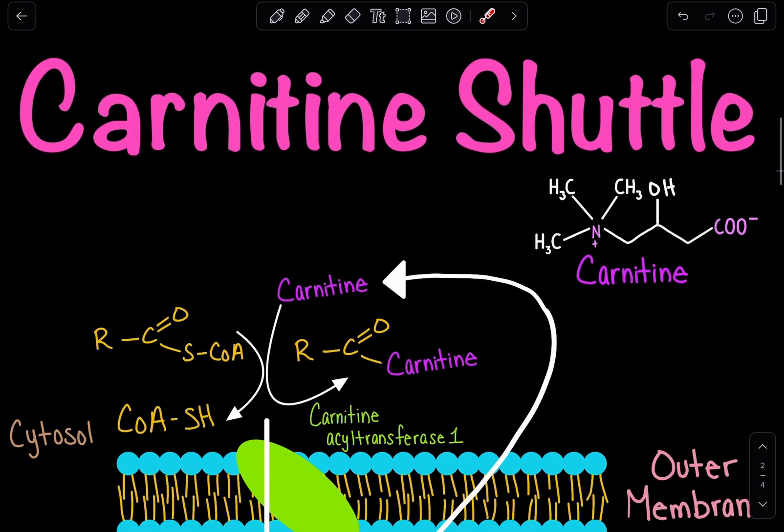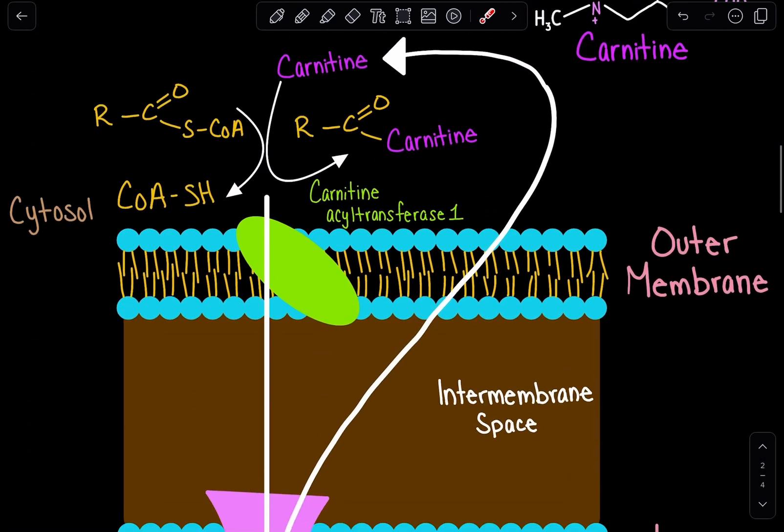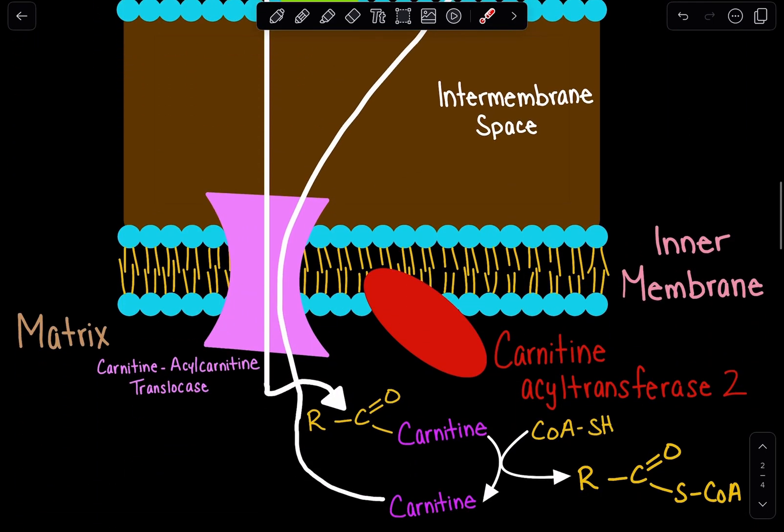This is essentially the carnitine shuttle pathway. It's a mechanism for when you have more than 14 carbons in your fatty acid and you need to bring it inside the mitochondrial matrix for beta oxidation.